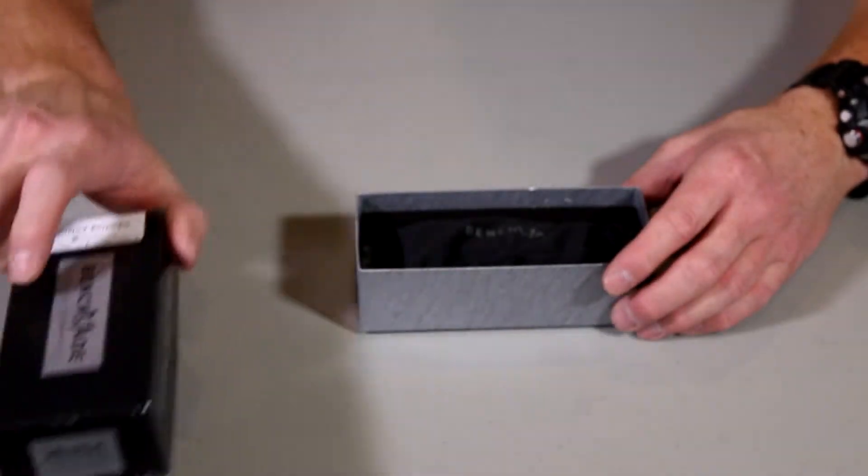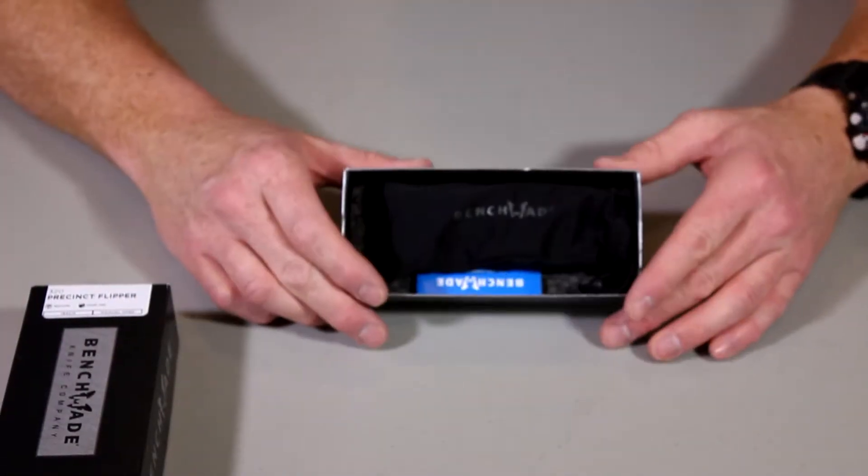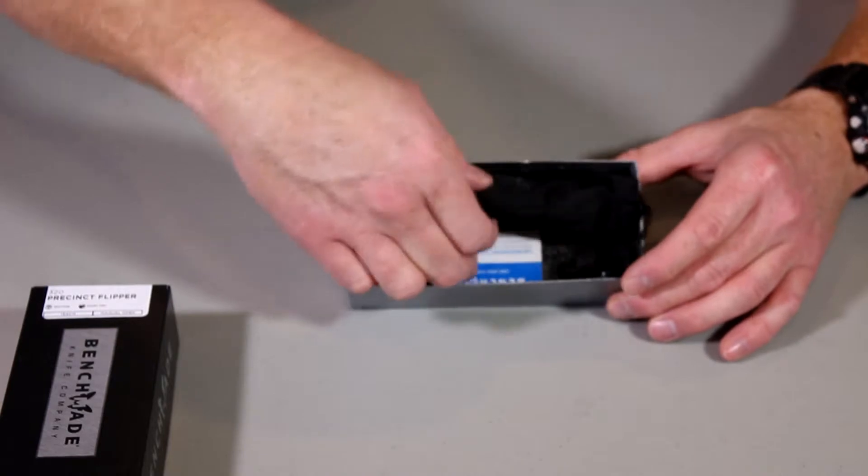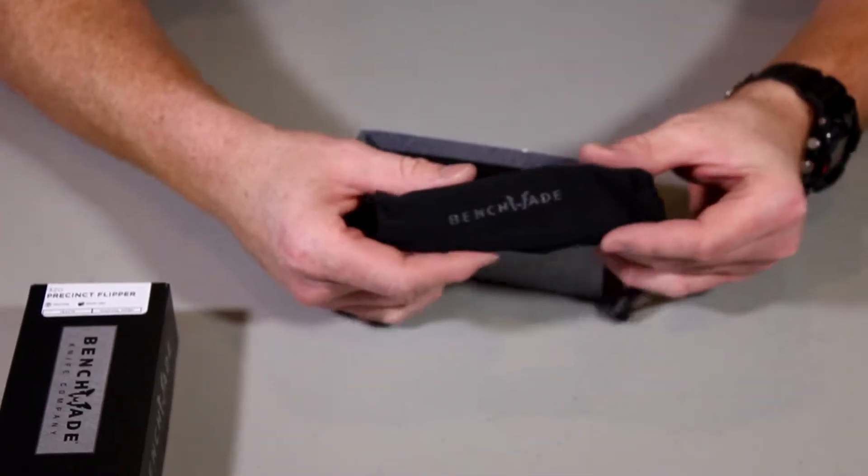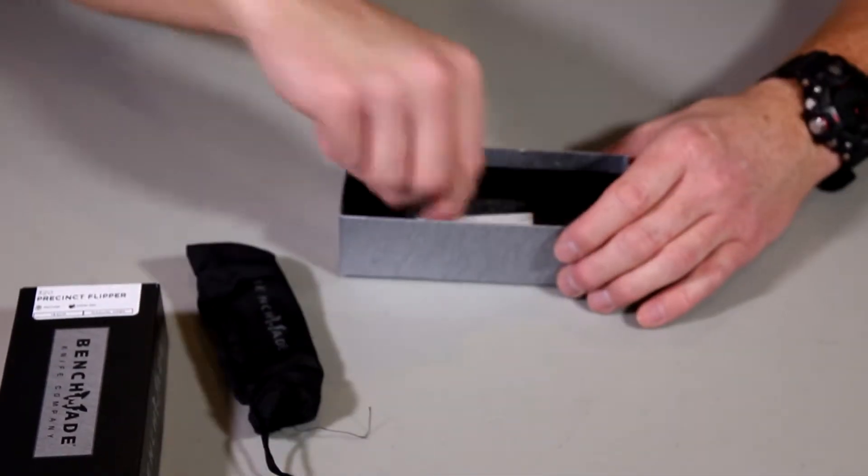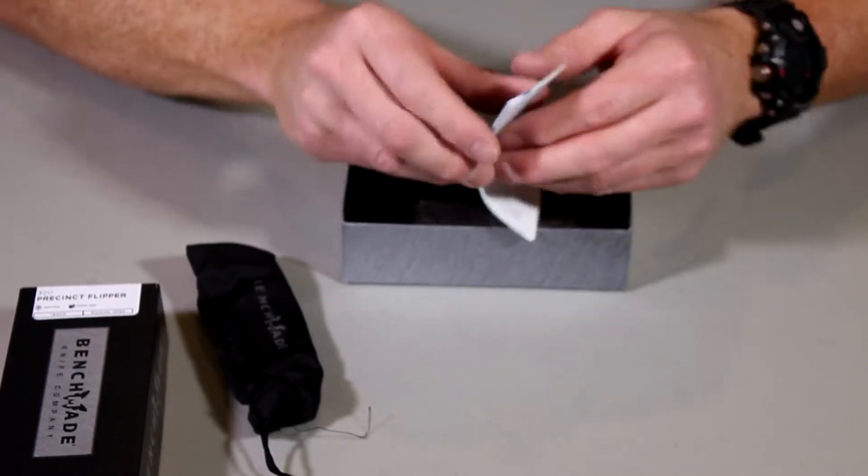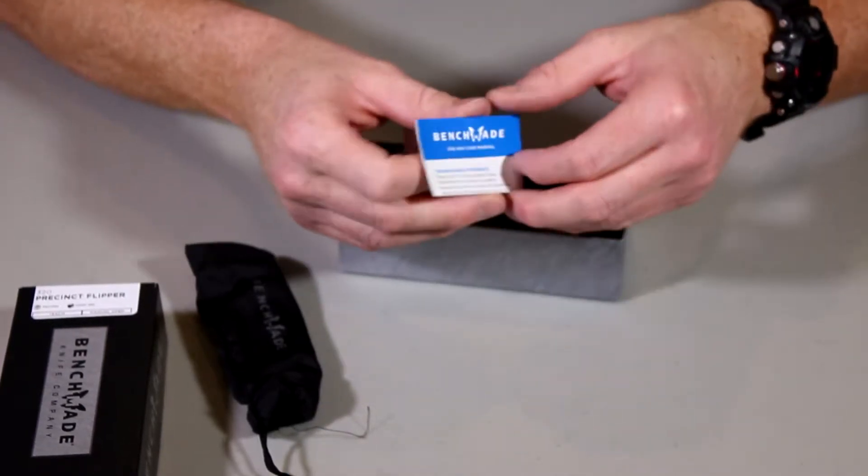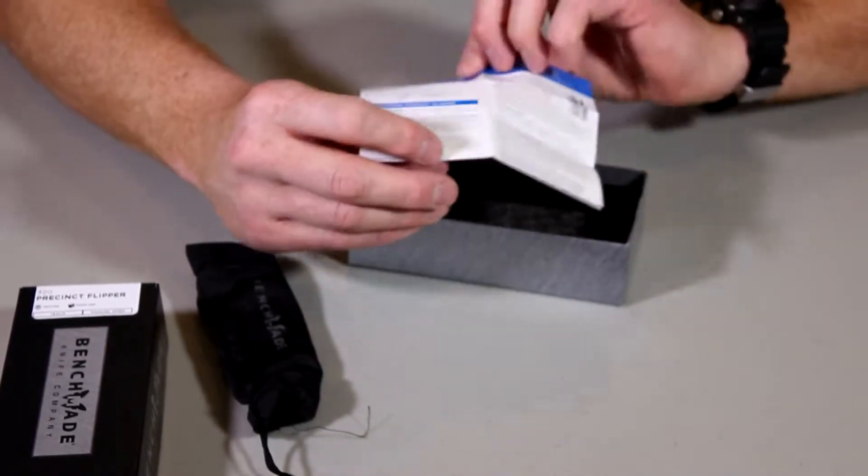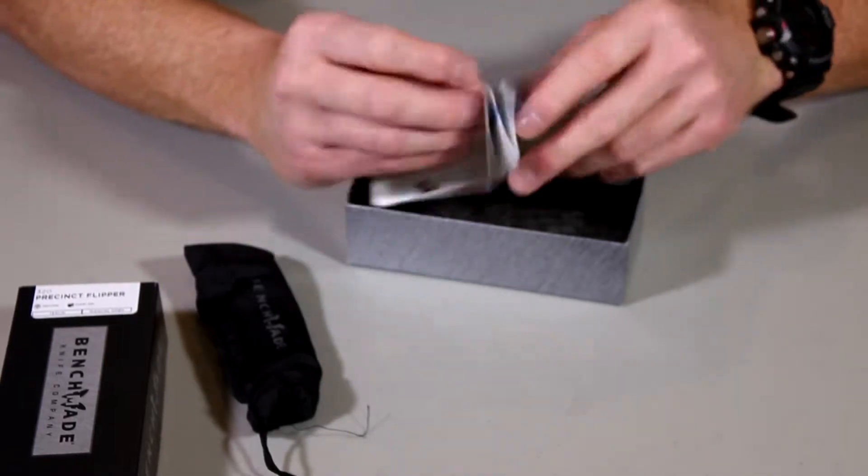Let's get right into it. Simple box there. And inside we have a soft case with the Benchmade logo. Kind of nice. Got a manual here. Benchmade manual. Goes through care and stuff like that. Put that aside.